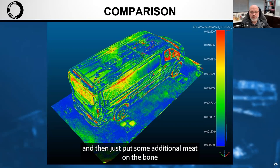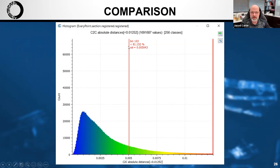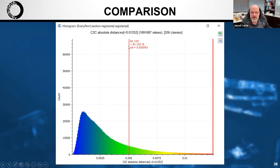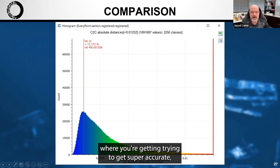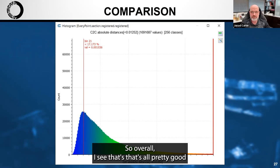Here's another view from the back right corner. To add some additional context, a histogram plot of those previous visualizations shows that 95% of the data in the overlays is under 1 centimeter. At 5 millimeters, 81 to 82 percent of the data is under 5 millimeters. Down to 1 millimeter, about 20% of the data is under 1 millimeter. Overall, that's pretty good in terms of comparison.